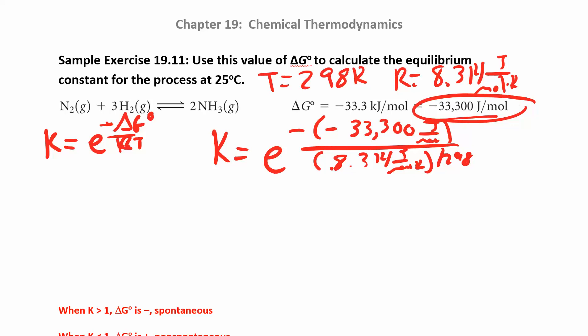You might want to do this in baby steps. So I got K equals E to the 13.45. So I did negative times negative 33,300 divided by R times T. Use a whole bunch of parentheses or do this in baby steps. So I have K equals E to the 13.45, which gives me like 6.87 times 10 to the 5. And let's just round to like one sig fig. You get like 7 times 10 to the 5.